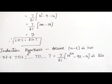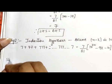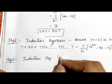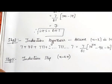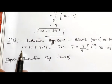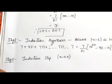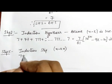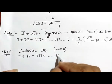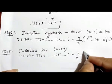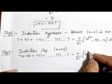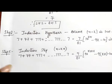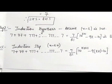In step 2, we assume this statement is true when n = k. Step 3 is the induction step. In this step, we put n = k+1 and prove that with the help of step 2, the statement remains true. So we put n = k+1, and the equation becomes 7 + 77 + 777 + ... = 7/81 × (10^(k+2) - 9(k+1) - 10).